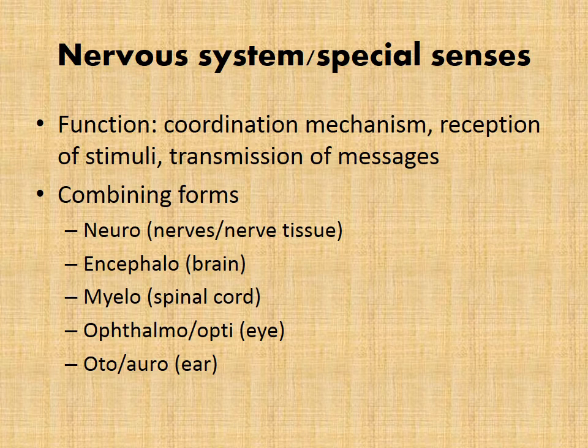The nervous system and special senses coordinate mechanisms, reception of stimuli, and transmission of messages within our body. Combining forms include neuro for nerves and nerve tissue, encephalo for the brain, myelo for the spinal cord, ophthalmo or opti for the eye, and oto or auro for the ear.